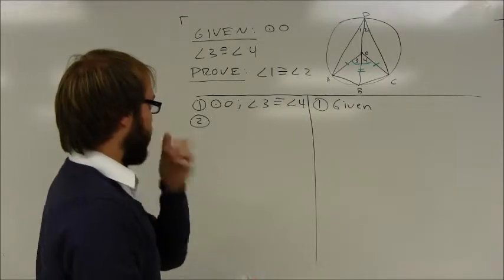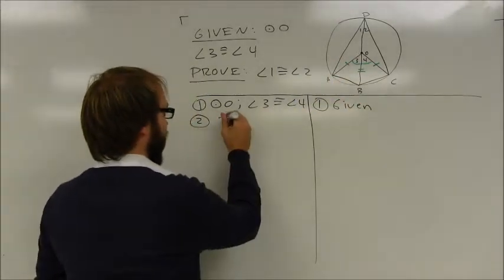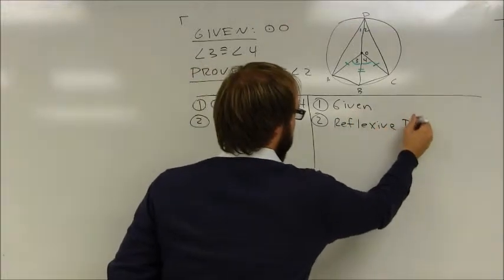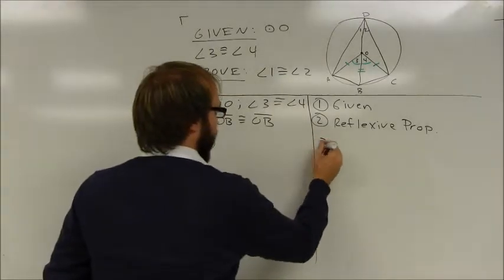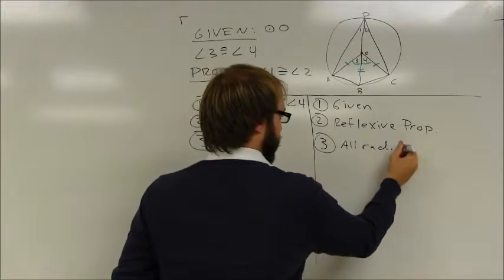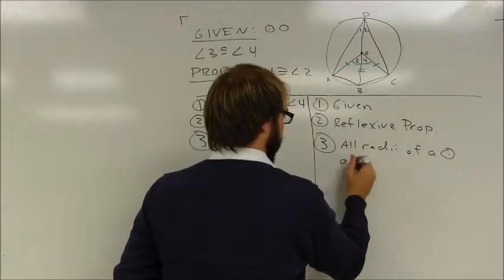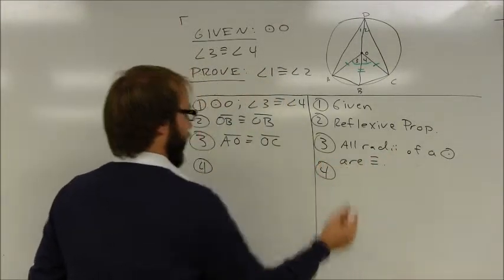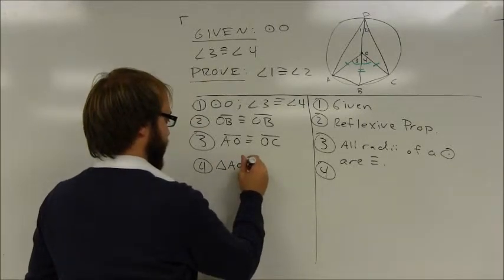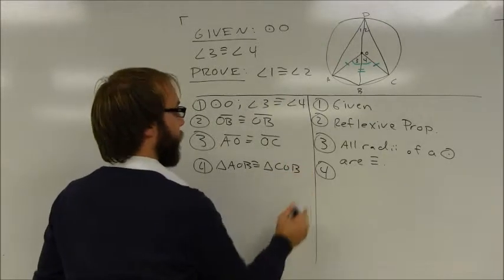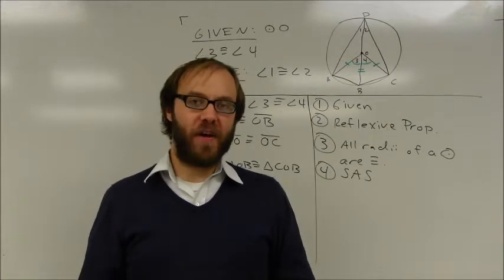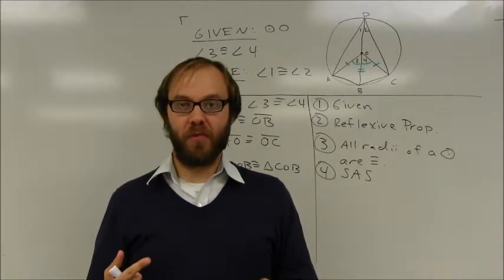First of all, make sure you mark every single step in the proof. So angle 3 congruent to angle 4 — that was given. I know that OB is congruent to OB because of the reflexive property. And I know that AO is congruent to OC because all radii of the circle are congruent. At this point, I've got enough information to prove the two triangles congruent by side angle side. So I'm going to say triangle AOB is congruent to triangle COB by side angle side.